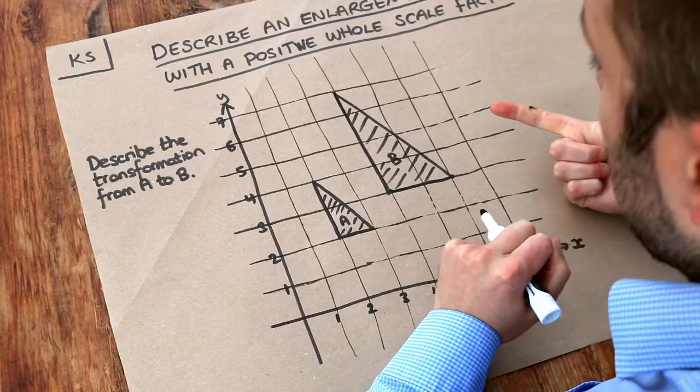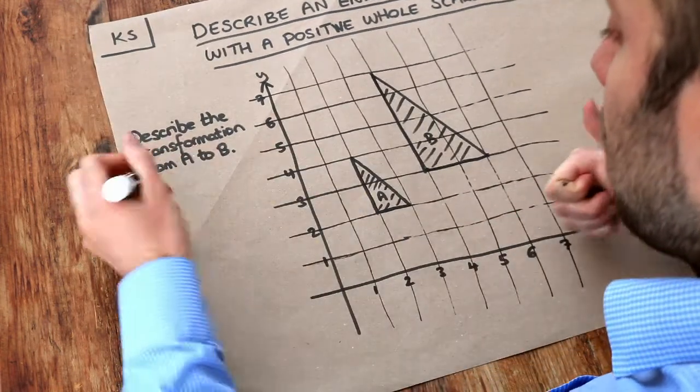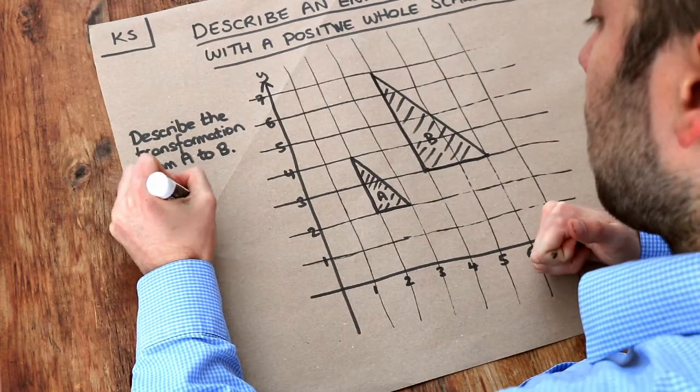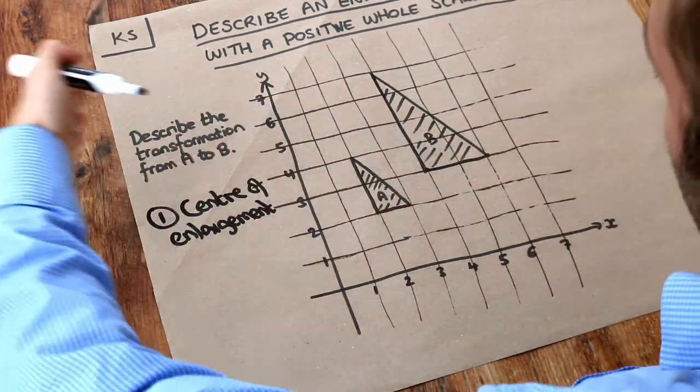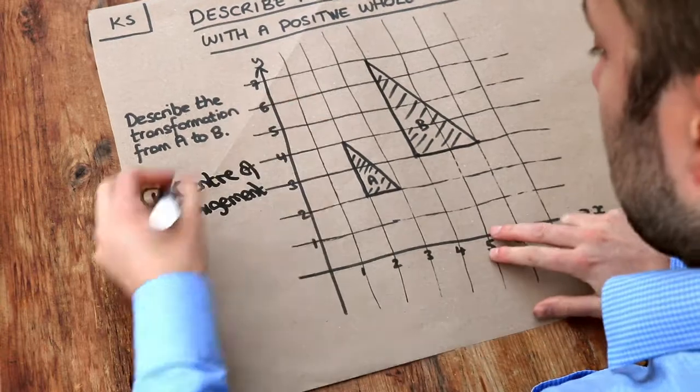Now there's two things you need when you describe enlargement. The first thing you need is the centre of enlargement. The centre of enlargement is the point in which it's enlarging from. And I'll explain that in a second.